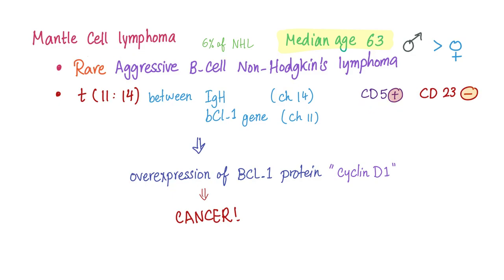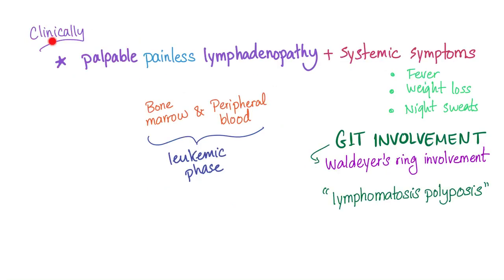Mantle cell lymphoma is CD5 positive but CD23 negative. Clinically, signs and symptoms include palpable, painless lymphadenopathy plus systemic B symptoms such as fever, weight loss, and night sweats. There may also be bone marrow involvement and peripheral blood involvement — we call this the leukemic phase.